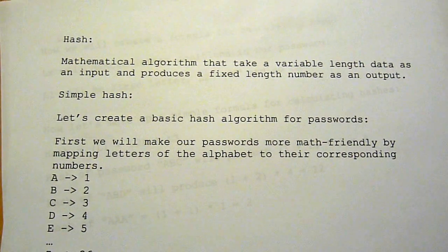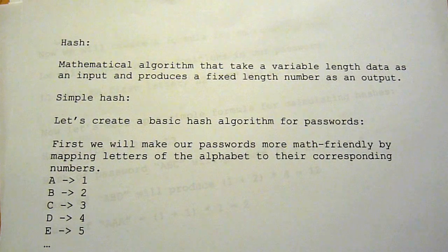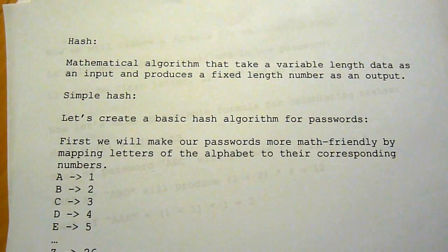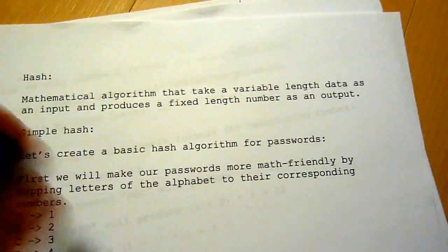So basically, it's a formula. You feed it a bunch of data and then you get a number as a result. It doesn't matter how long the data is, the number will still be in a certain range, so from 1 to 10 million or whatever.